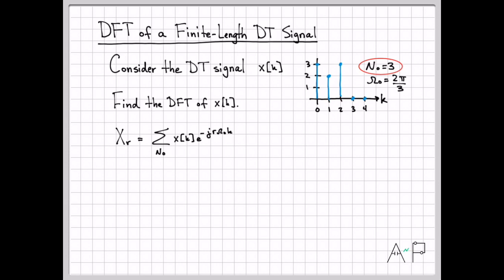Since n naught is three, my sampling interval in the frequency domain is always 2 pi over n naught. So the values that I'll be computing for the spectrum will be 0 times omega naught, 1 times omega naught, and 2 times omega naught for the values of r equals 0, 1, and 2. So let's go ahead and rewrite my summation now that I know what n naught is and what omega naught is. Here is the summation that I need to compute.